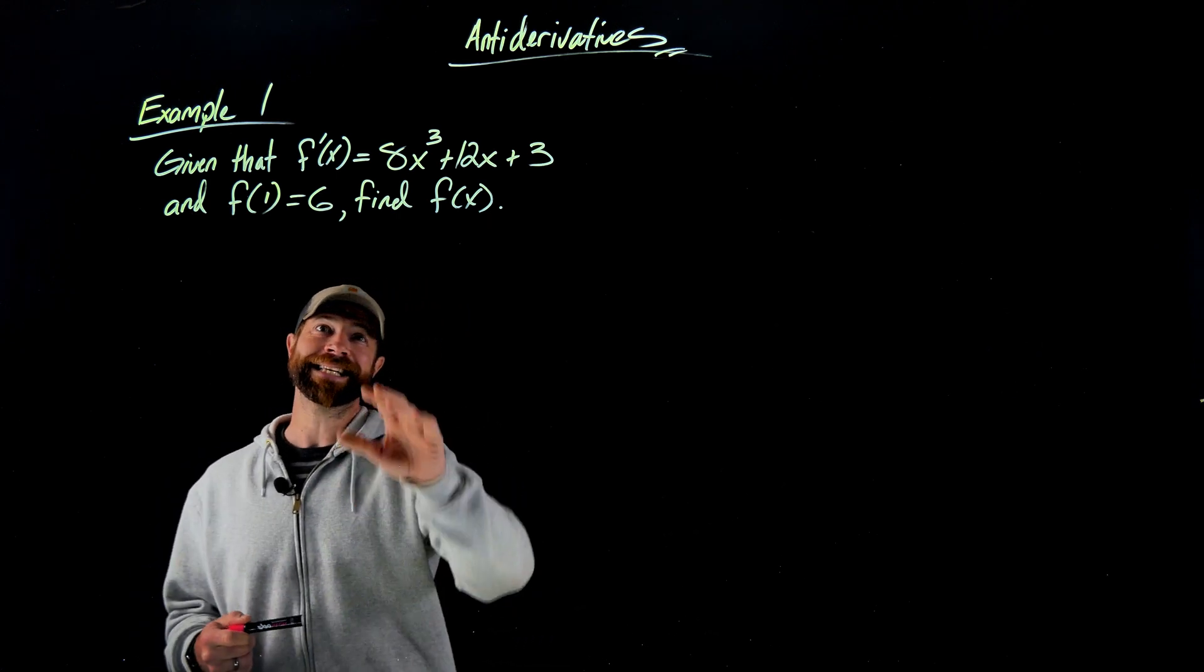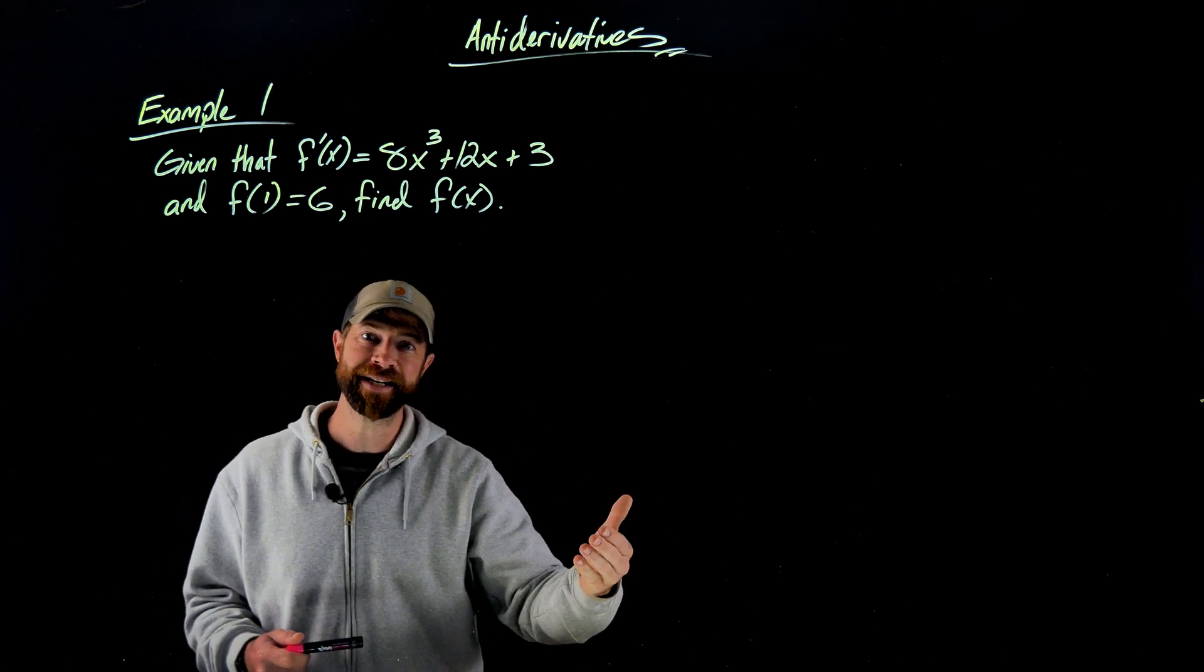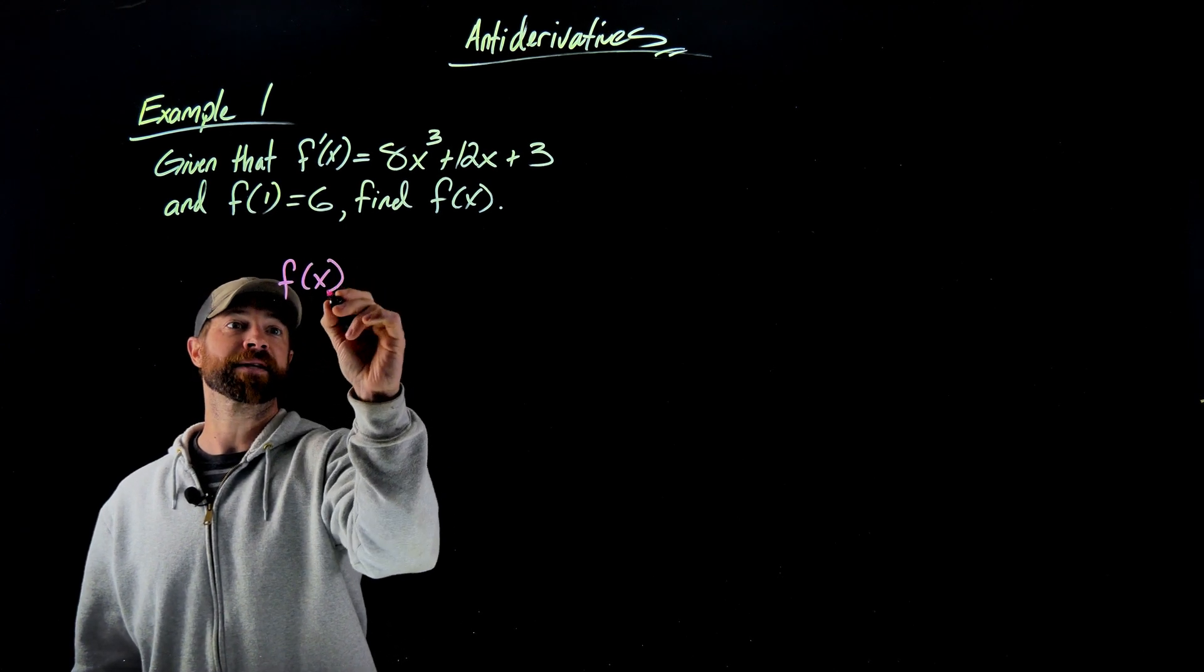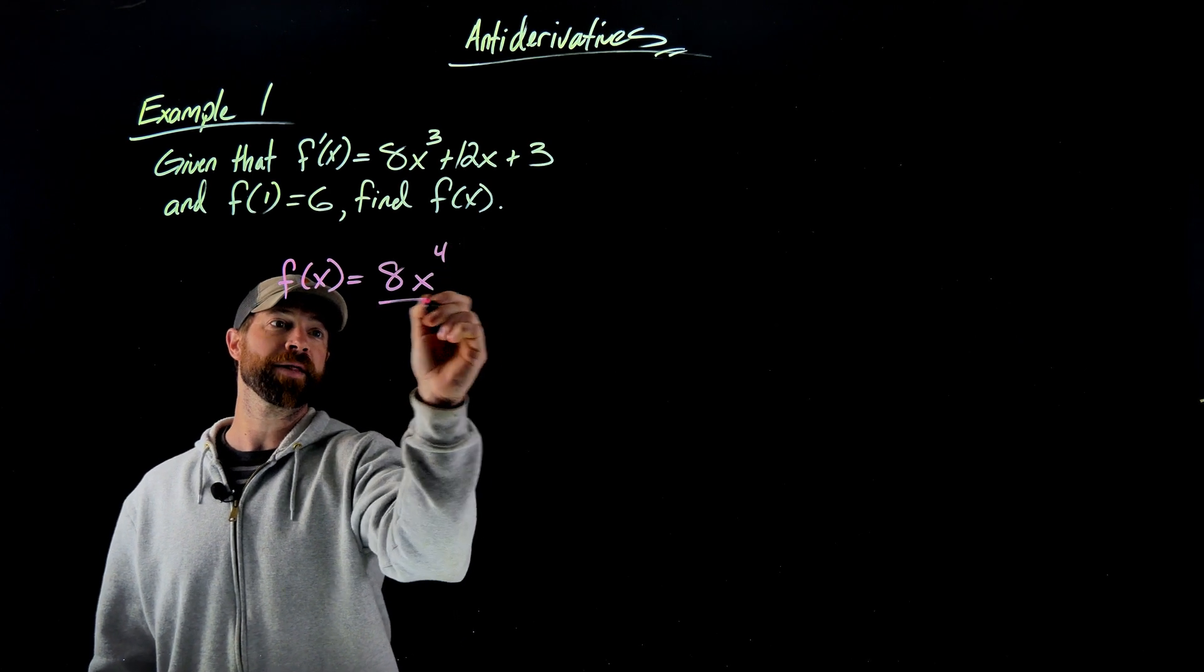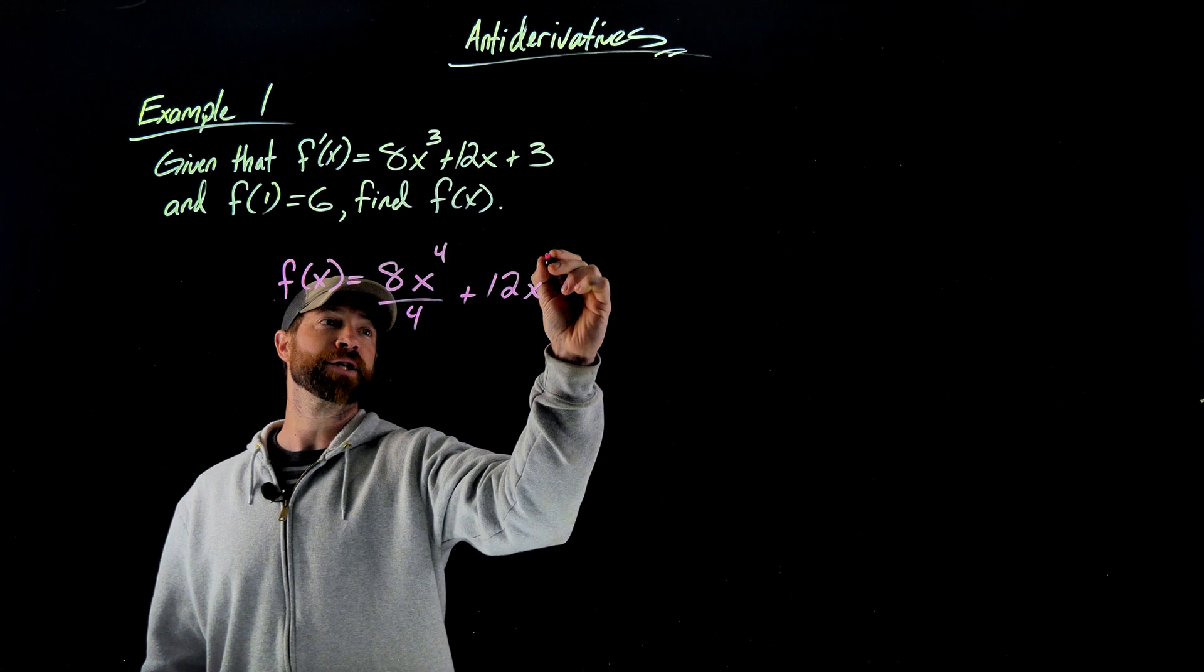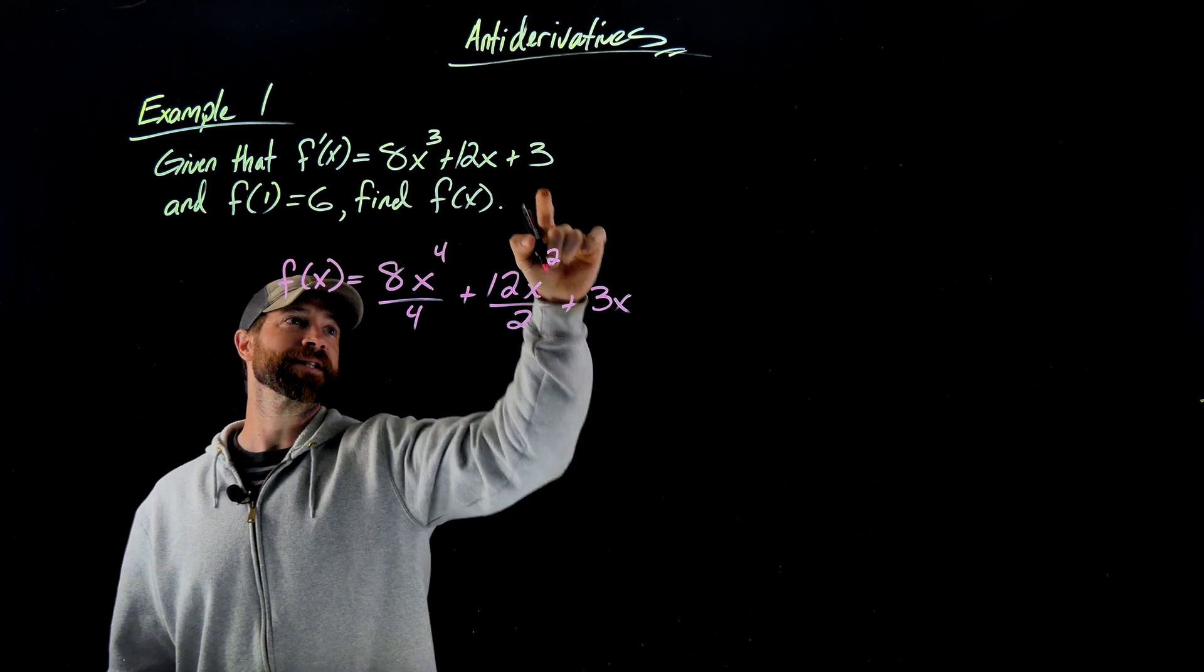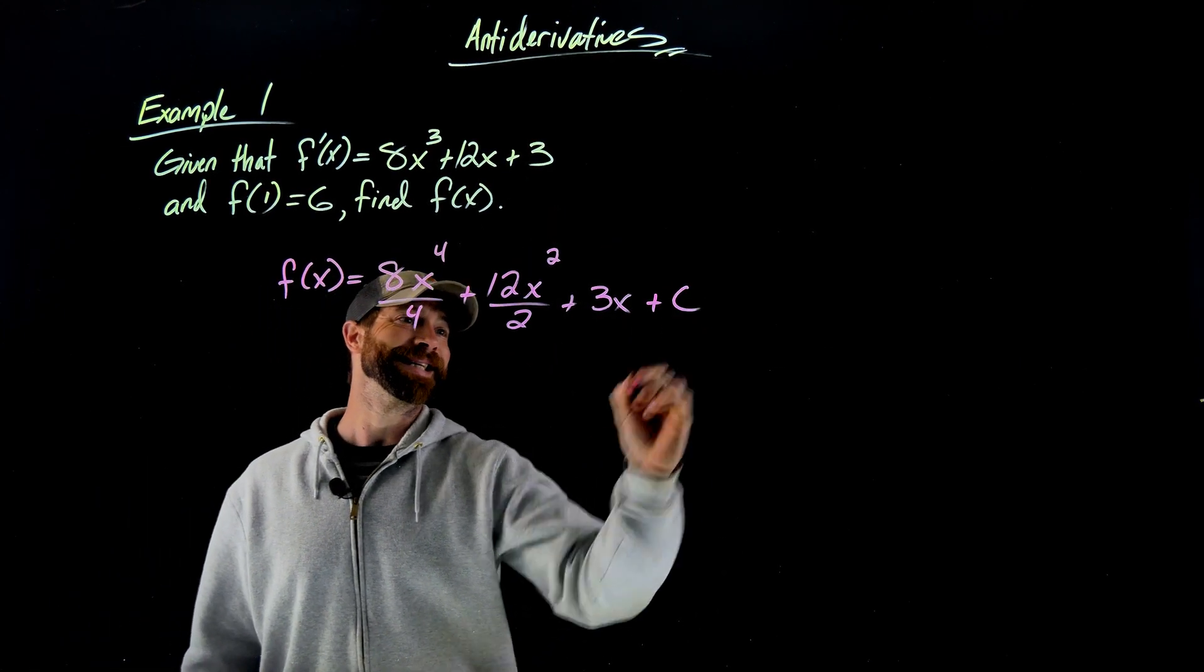The first step in this case is to find the antiderivative of f prime of x because the antiderivative of f prime of x is f of x. So we'll use the anti-power rule. f of x would be 8x to the fourth, we add one there and then divide by 4, plus 12x squared divided by 2, plus 3x. This constant always turns into this linear term, and then plus c.